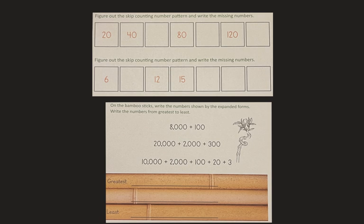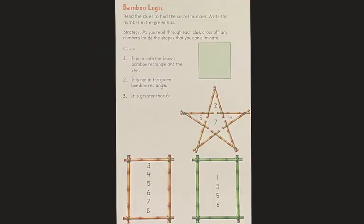At the bottom of the page it says on the bamboo sticks, that's these pictures down here, write the numbers shown by the expanded form. So it gives you the expanded form and you're writing the standard form. Write the numbers from greatest to least. So the greatest number is the biggest, least is the smallest. So I would look and see, which one is going to be the biggest? Looking at the first place values that they give me. And I would figure out that one first, and then the next largest, and finally the smallest.